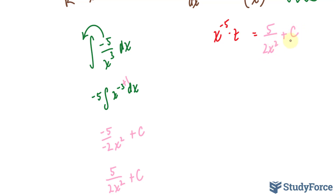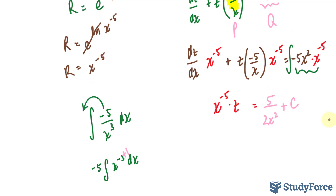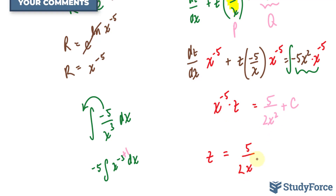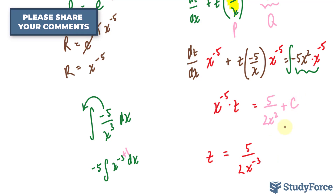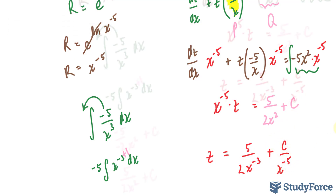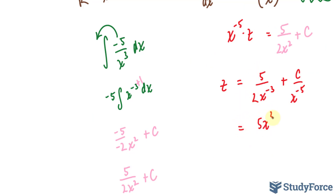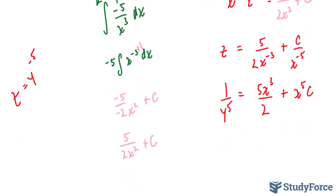The solution is in terms of z, so we solve for z by dividing both sides by x^(−5): z = (5/2)x²·x^(5) + C·x^5 = (5x^7)/2 ... Simplifying: z = 5x³/2 + Cx⁵. Since z = y^(−5) = 1/y⁵, substituting back gives 1/y⁵ = 5x³/2 + Cx⁵. That is how to reduce nonlinear equations to linear form using Bernoulli's equation.